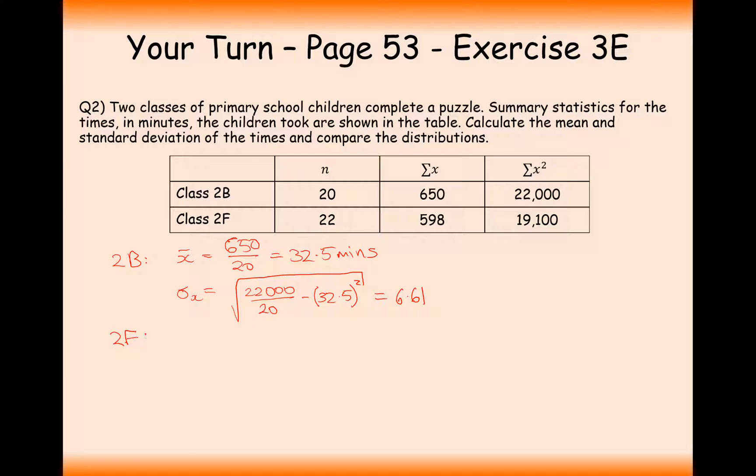For class 2F, we'll use the letter y. In this case, we're going to have the mean, which is the sum of x divided by n, which is equal to 27.2. So a bit faster than class 2B.